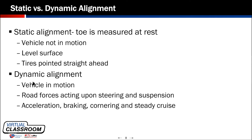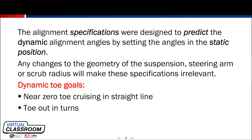So the alignment specs that we're so good at trying to drill down to and meet are static specifications, and they're there to predict what's going to happen to the vehicle as it's going down the road. Today we're going to give you three different scenarios where something bends, shifts, or alters the scrub radius — which can make your alignment specifications almost irrelevant because the conditions under driving have changed so much.